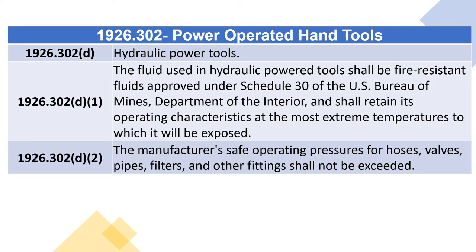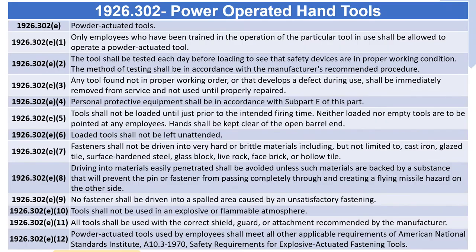1926.302(d)(2): The manufacturer's safe operating pressures for hoses, valves, pipes, filters, and other fittings shall not be exceeded. 1926.302(e) Powder Actuated Tools. 1926.302(e)(1): Only employees who have been trained in the operation of the particular tool being used shall be allowed to operate a powder actuated tool. 1926.302(e)(2): The tool shall be tested each day before loading to see that safety devices are in proper working condition, in accordance with the manufacturer's recommended procedure.